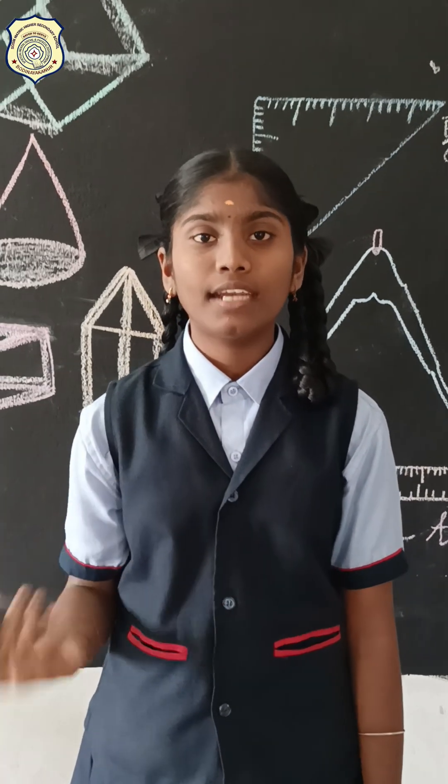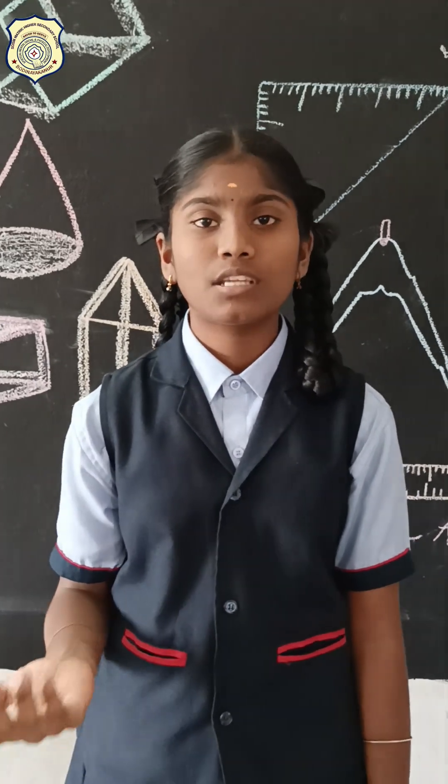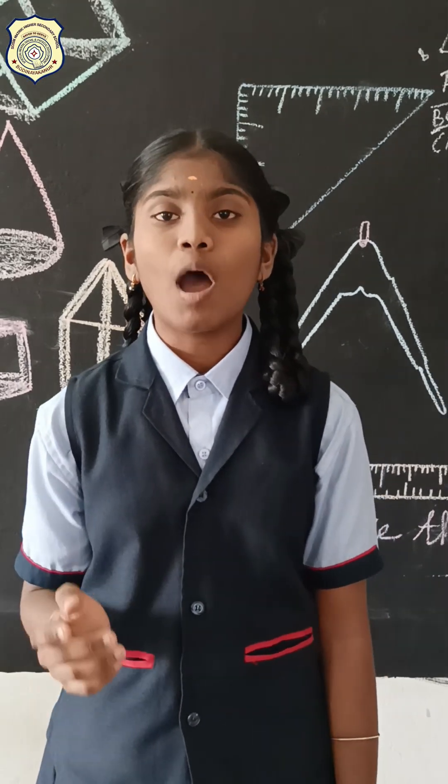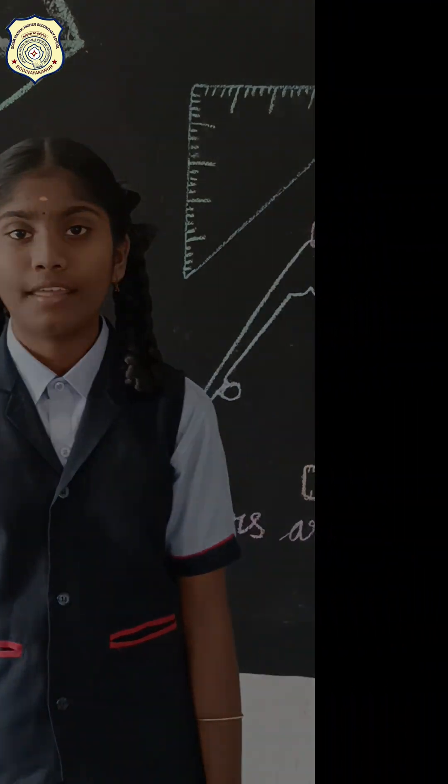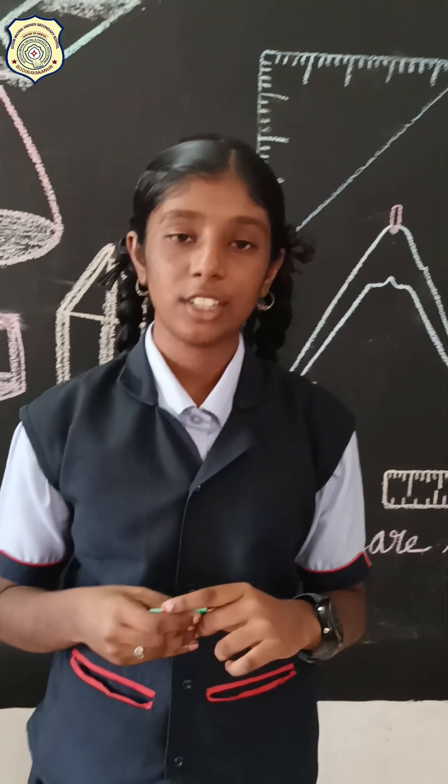What is a quadrilateral? A quadrilateral is a closed figure formed by 4 line segments. The sum of interior angles and exterior angles of a quadrilateral is 360 degrees. Let us now learn about the various types of quadrilaterals and their properties.